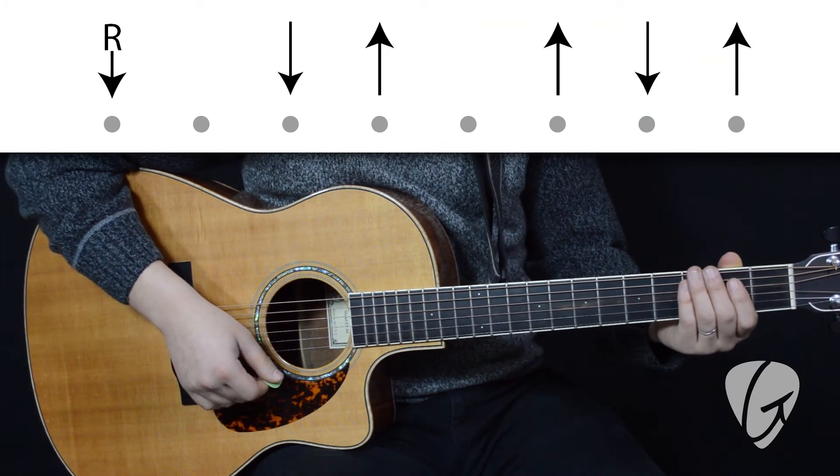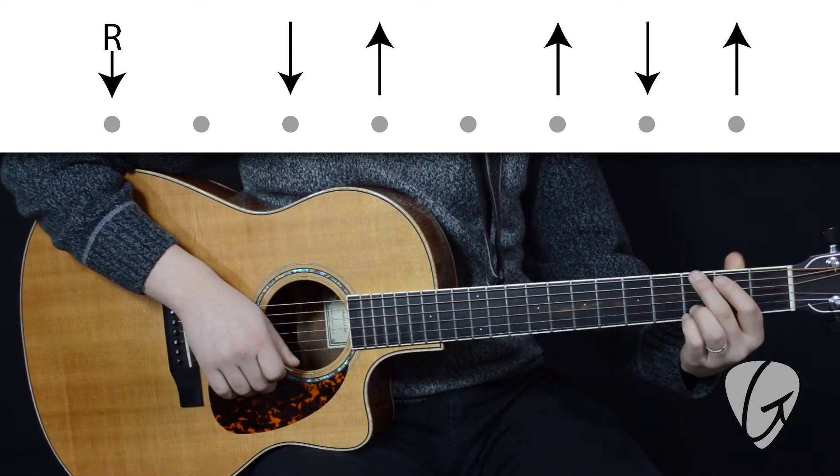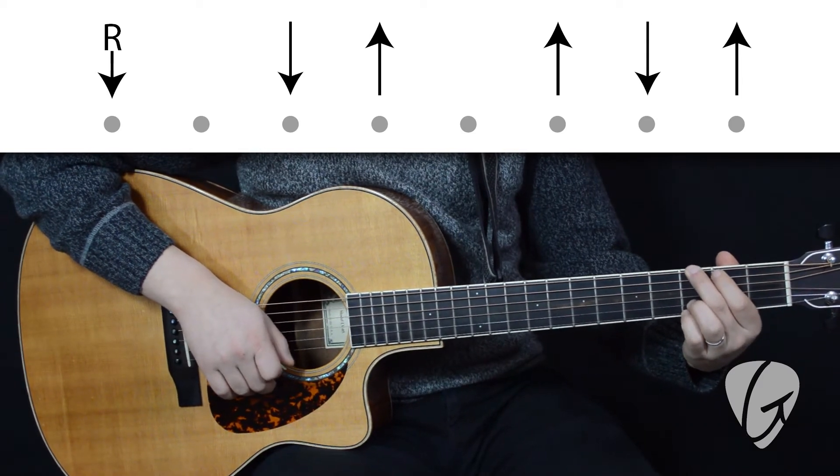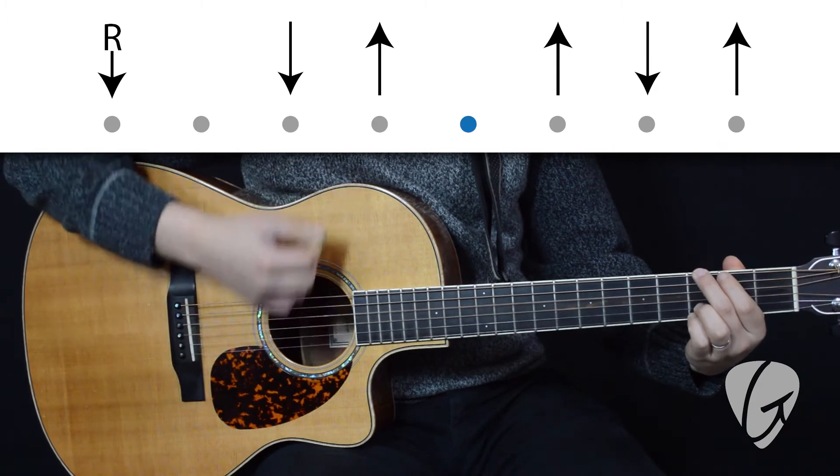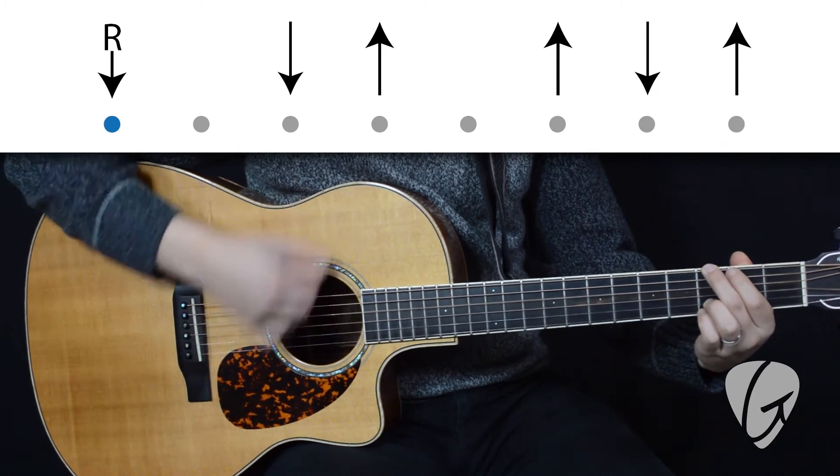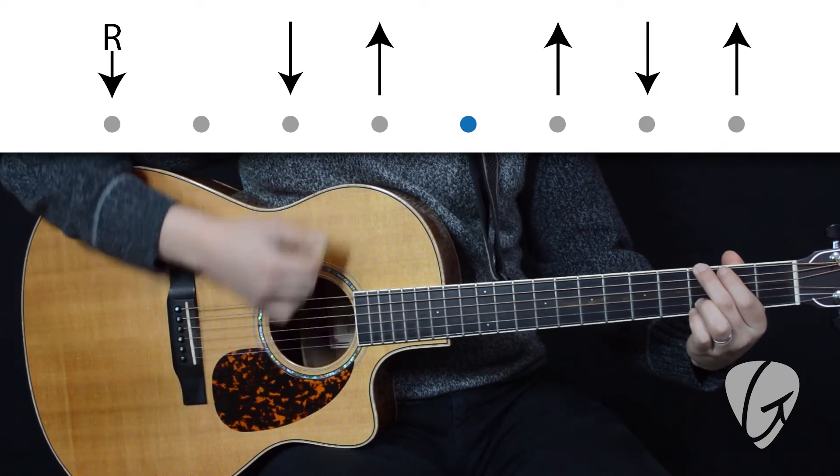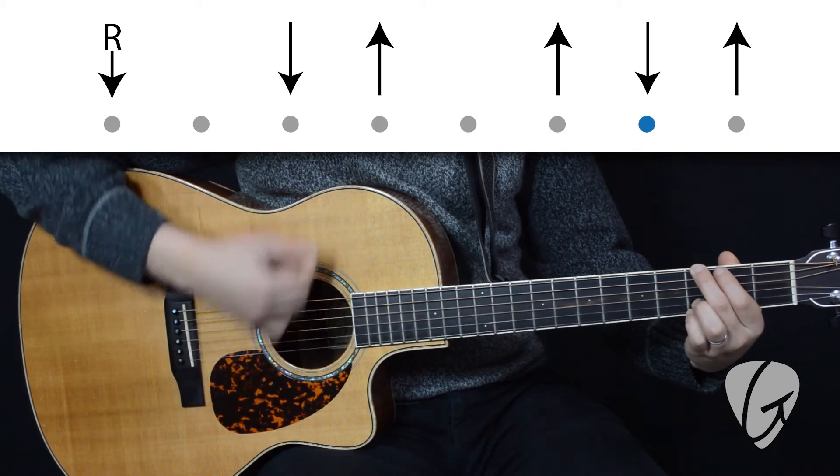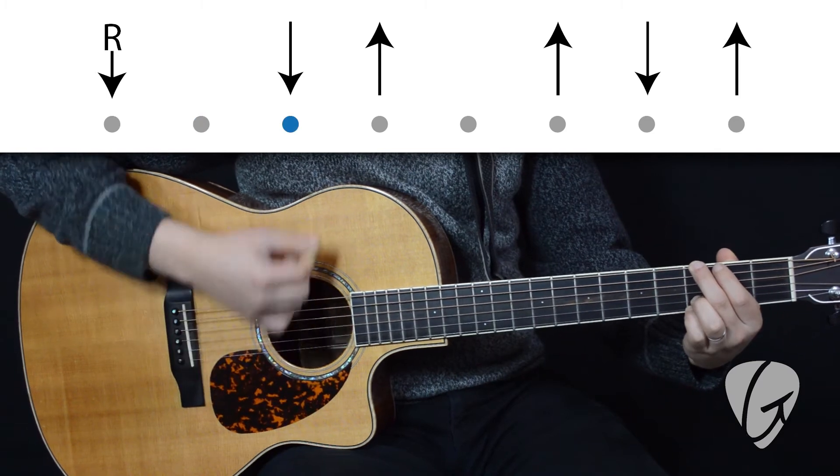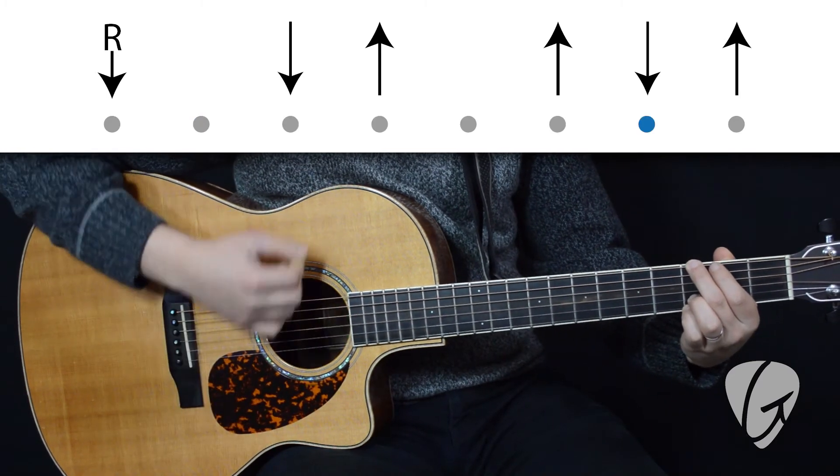So let's grab a G chord and give it a try. One, two, three, four. Root, down, up, up, down, up. Root, down, up, up, down, up.